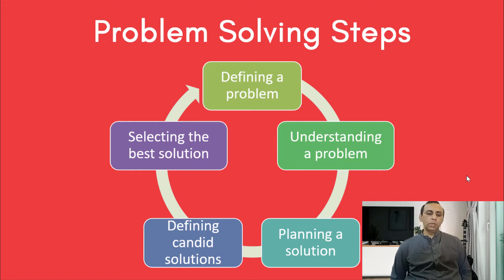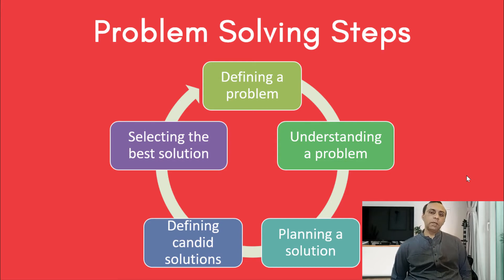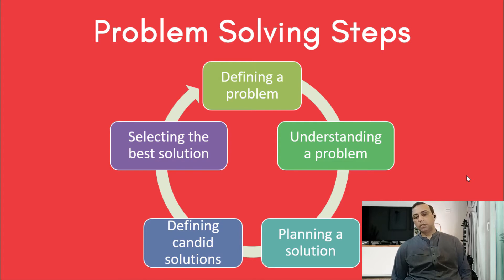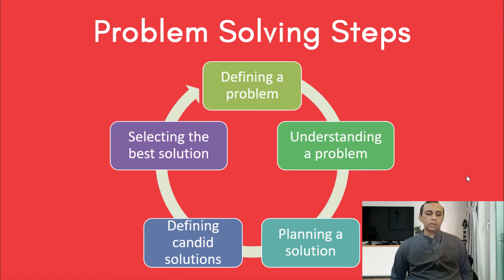In the last lecture we discussed one thing: Einstein has said that if he had to save a planet and he had 1 hour, then he would spend 59 minutes to define the problem, and then fix it. So defining the problem and understanding the problem we have already discussed. Today we are covering planning the solution, candidate solution, and best solution.